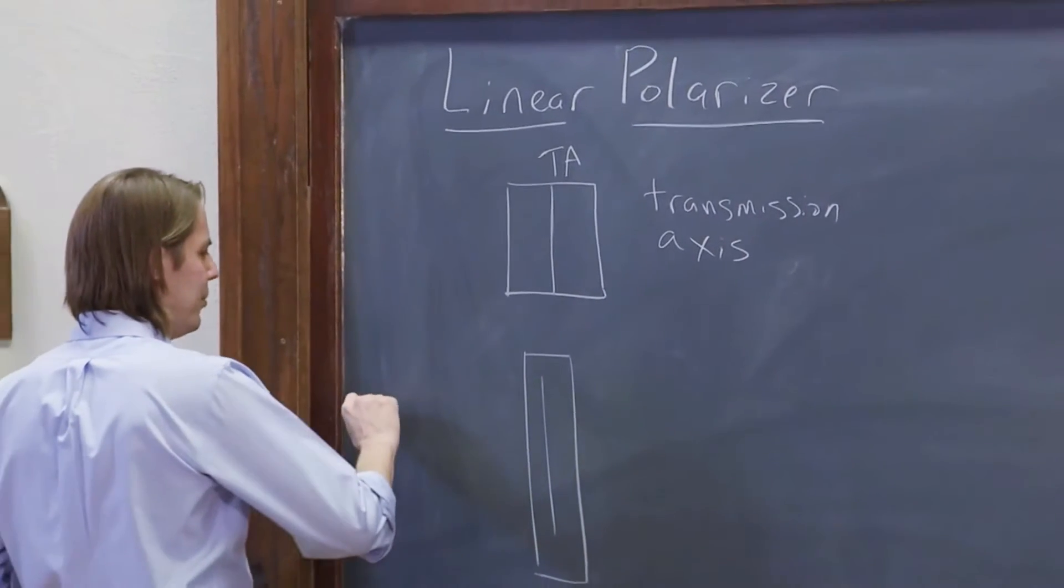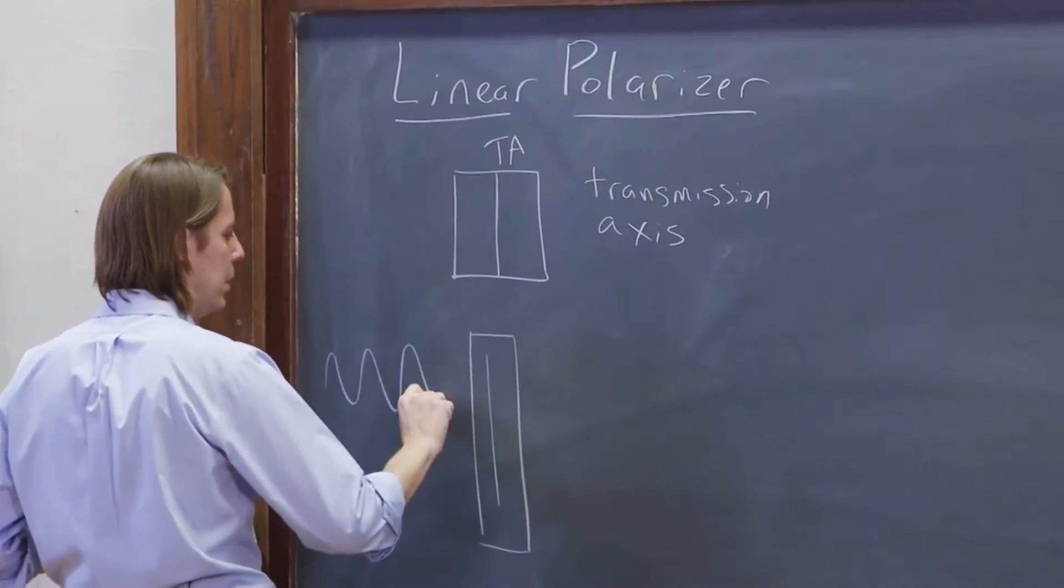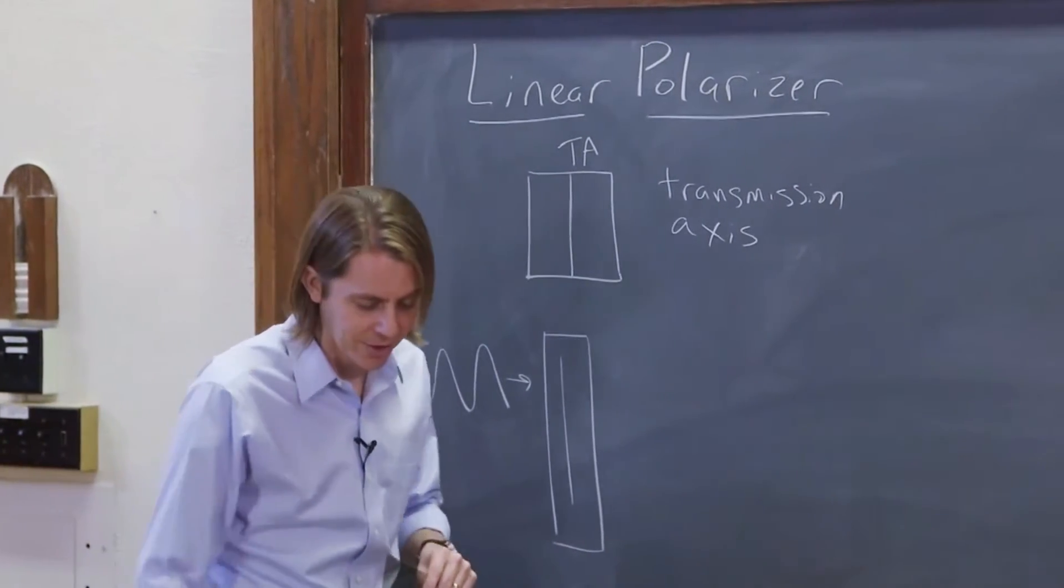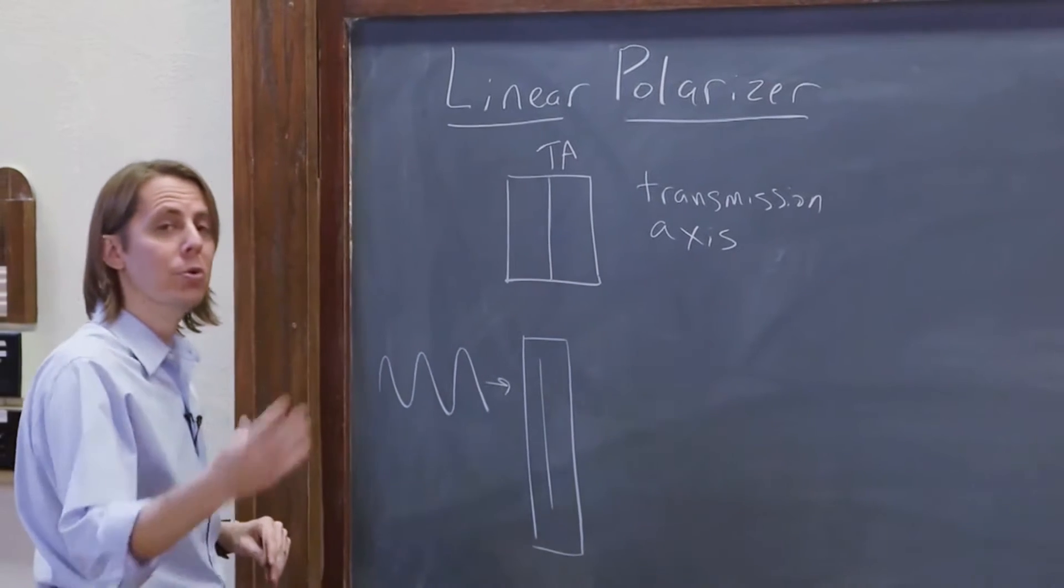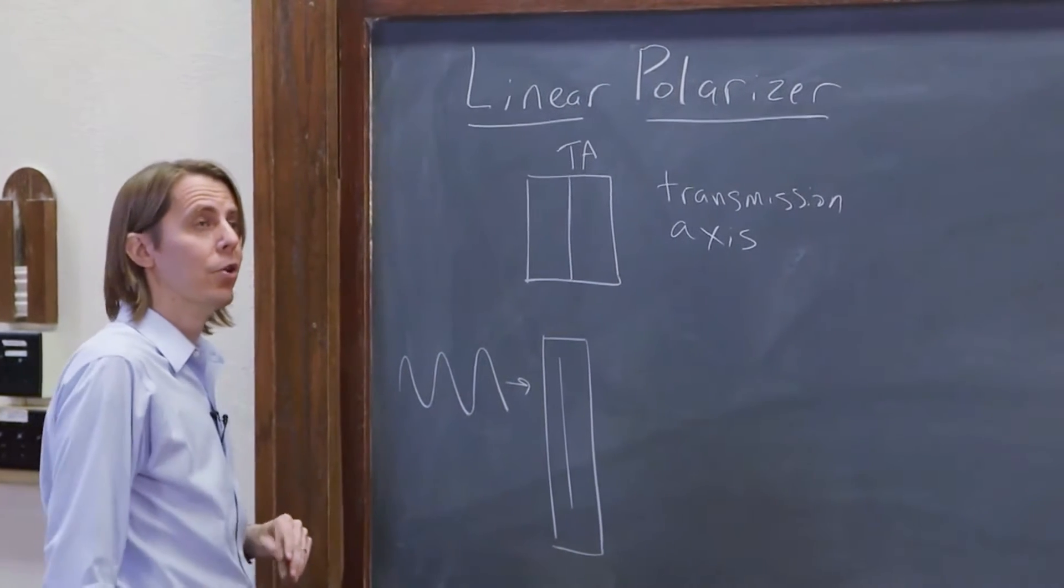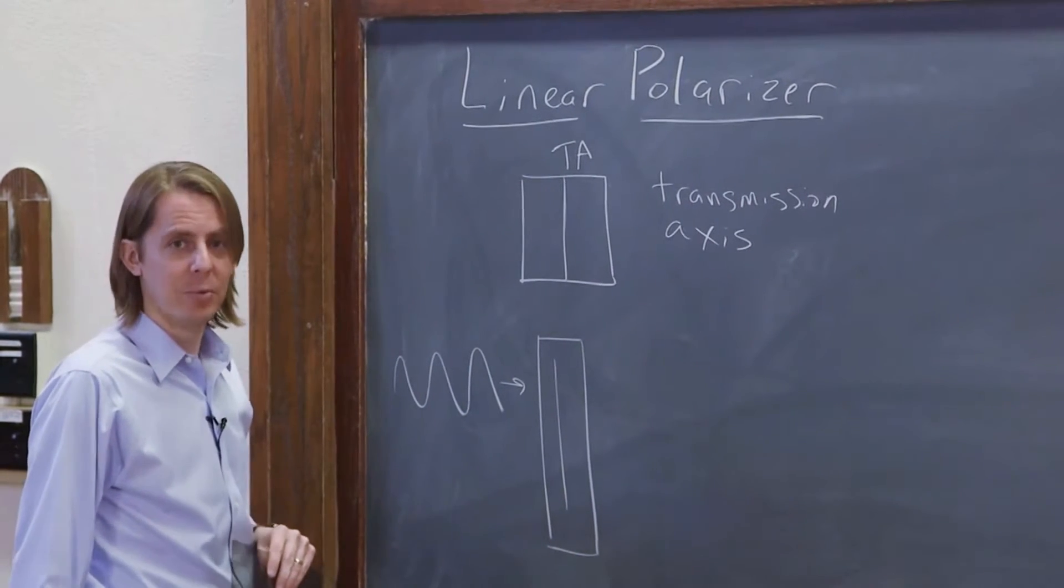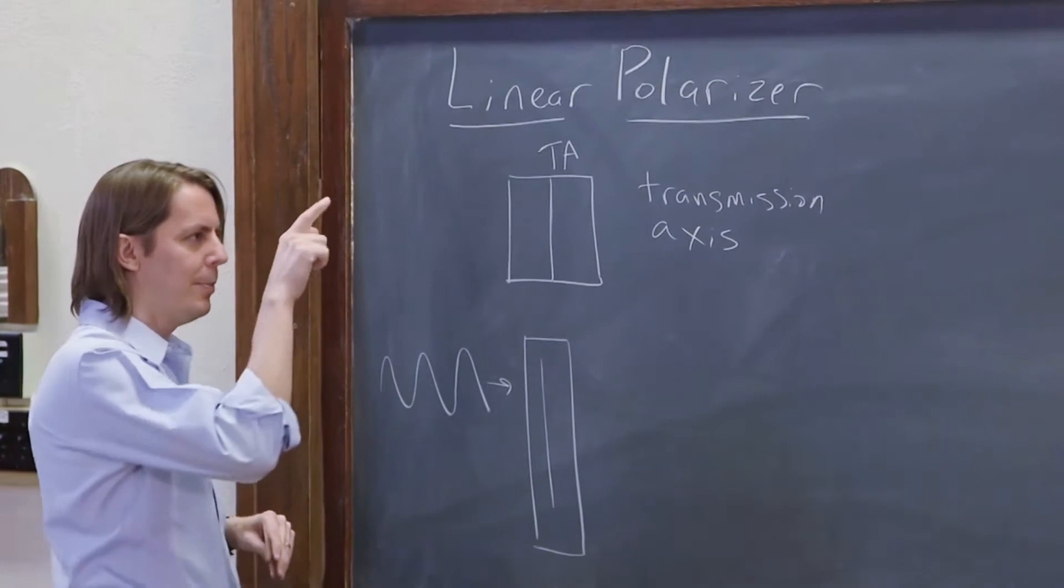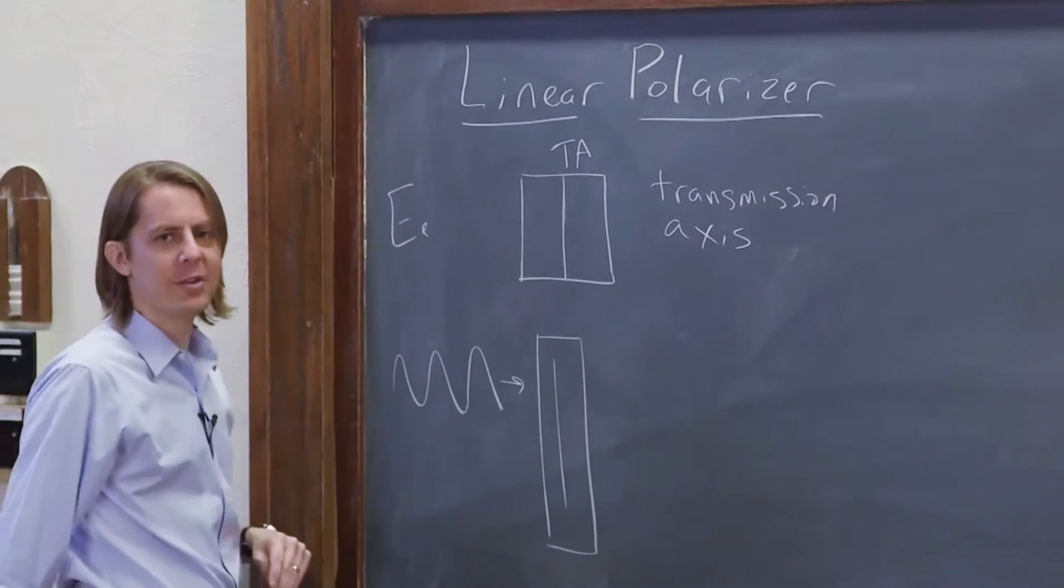And if we have some light come in like this, I'm going to characterize the irradiance of that light. And now I'm going to break a rule from learning sequence three about plane waves. I said that we should be proper and label irradiances EE. Remember this? That's a proper irradiance. But we're not going to do that.